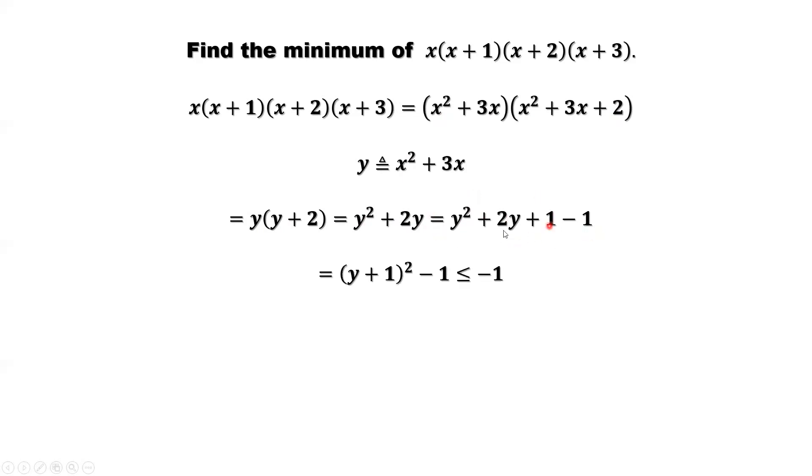Because the first part, we can use it to complete a square. That's y plus 1 squared. Anything squared, the minimum value is 0. When y equals negative 1, this equals 0. This is always less than or equal to negative 1. Negative 1 is the minimum.